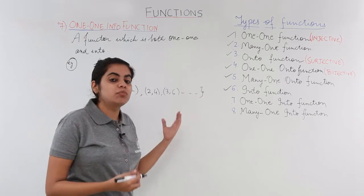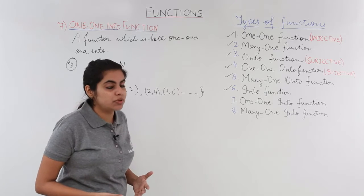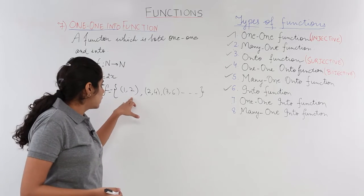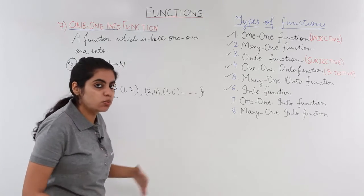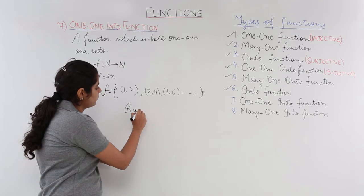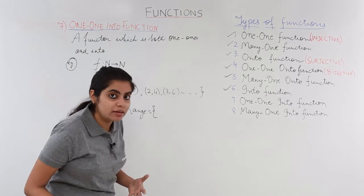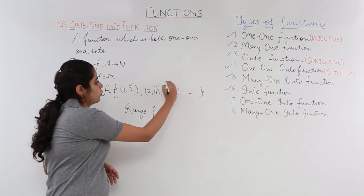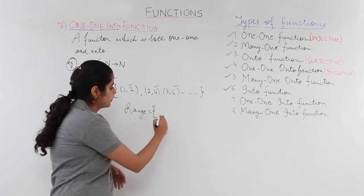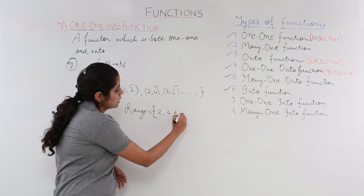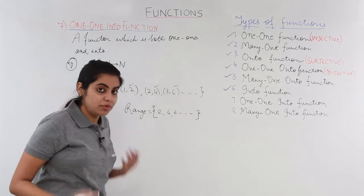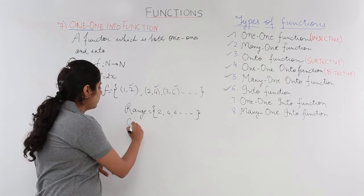Now one important thing to note in this type of function is: what is the range that you are getting? The range is the second element in the ordered pair. It is 2, 4, 6 and so on.